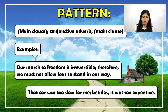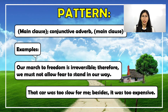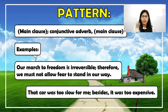This is our independent clause because we have the subject 'march' and the verb 'is,' and it expresses a complete thought. Notice that after this clause it is followed by a semicolon, then the conjunctive adverb 'therefore,' followed by a comma. After this is another independent clause: 'we must not allow fear to stand in our way,' with subject 'we' and verb 'allow,' expressing a complete idea.